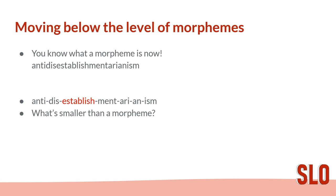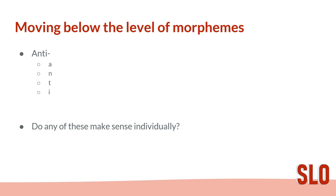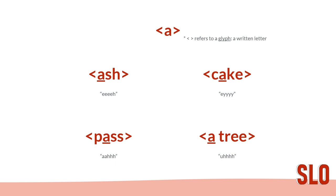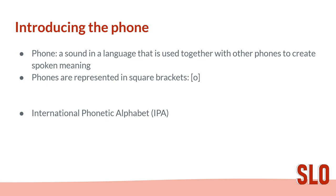Have you ever thought about what's smaller than a morpheme? One way to look at it is that each morpheme consists of sounds. But do any of these sounds make sense individually? For example, in the morpheme 'anti', what does 'e' or 'n' or 't' mean? Also, writing 'a' can be misleading — what sound am I referring to? Is it 'a' as in 'ash', 'cake', 'pass', or 'a tree'? These different vowel sounds, or any sounds in linguistics, are called phones. A phone is a sound in a language used together with other phones to create spoken meaning. Phones are represented in writing in square brackets.